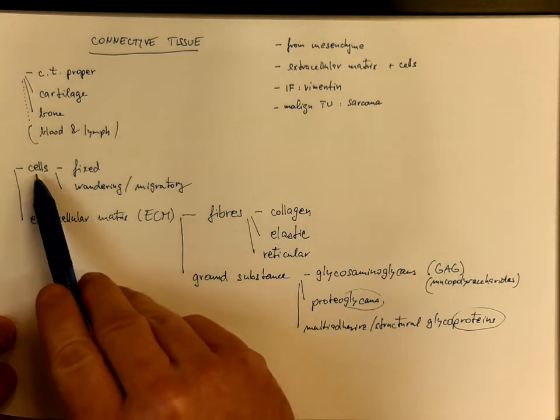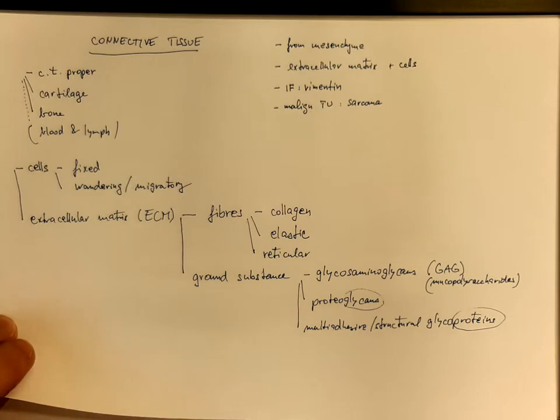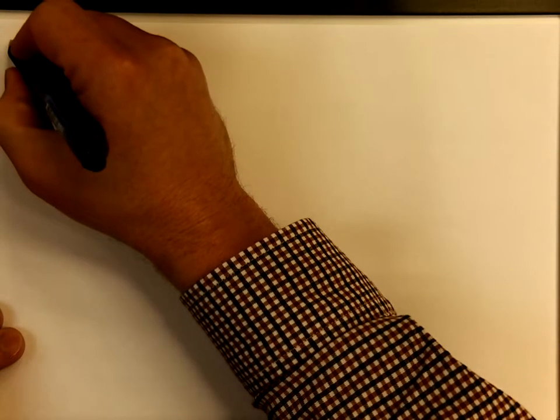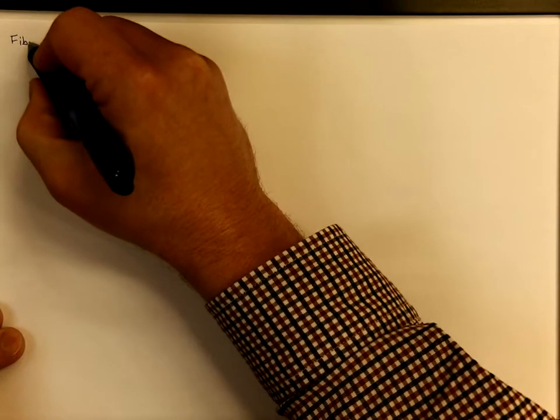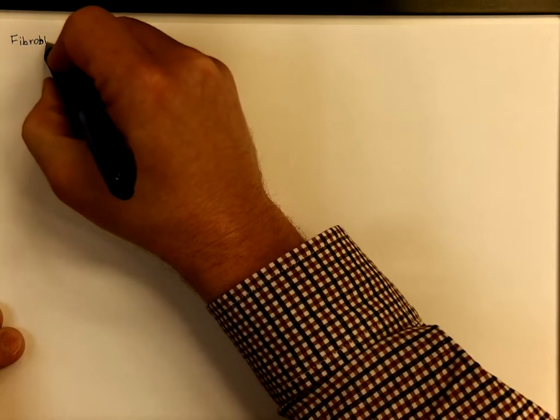Now let's have a look at the cells. We start with the fixed cells of connective tissues. The most common cell type that occurs in connective tissues is the so-called mother cell of connective tissue, which is the fibroblast.